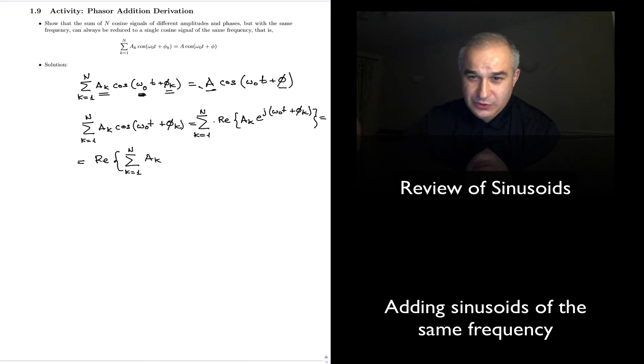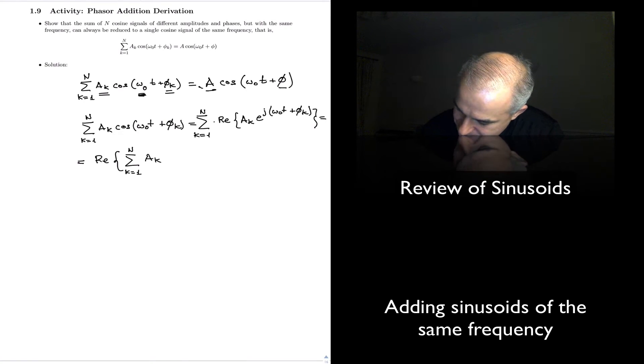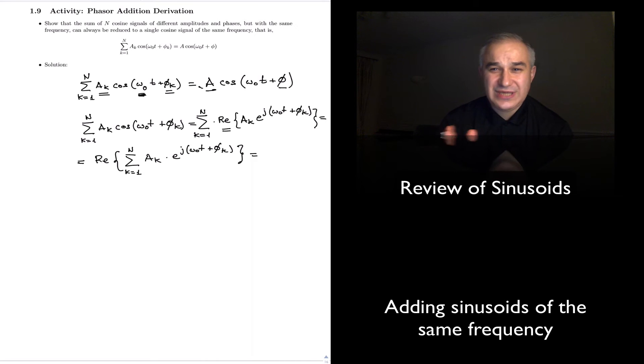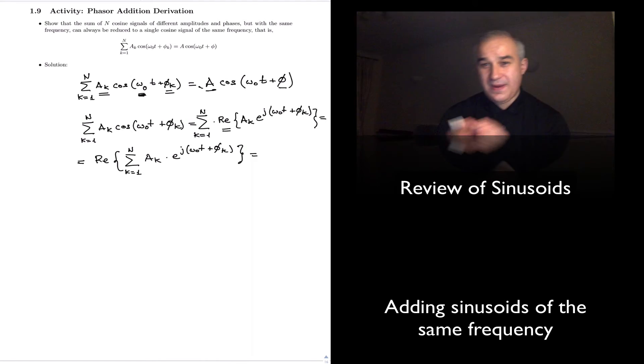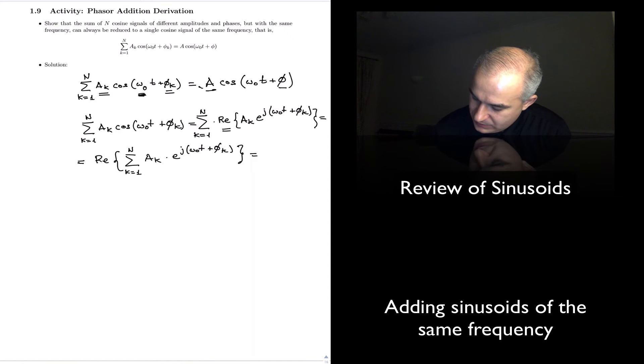So, A_k, that means that each amplitude can be different. So, I'm going to add, from A to the j. All I did was, since Summatory is a linear operator, to take the real part out.